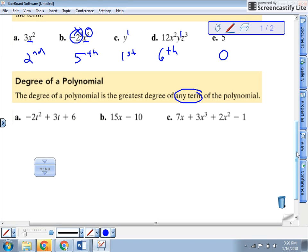So we look at each term. This has a second degree. This is a one, that's a zero. So the highest degree is two. So this is a second degree polynomial. See how that works? This is one. This is zero. So this is a first degree.